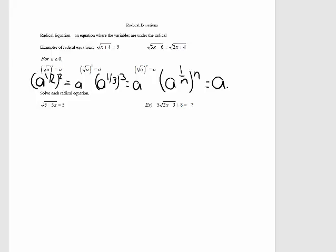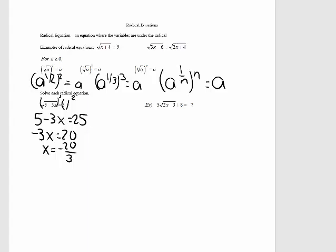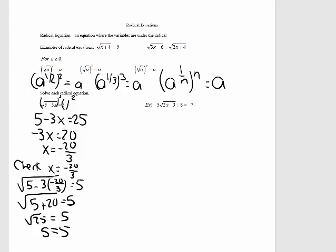Let's take a look at the first example. I want to square both sides. So that's 5 minus 3x, and 5 squared is 25. Subtract the 5 and divide by negative 3. Now I want to check to see if negative twenty-thirds is a solution to this equation. The last line is 5 equal to 5, so negative twenty-thirds is a solution here.